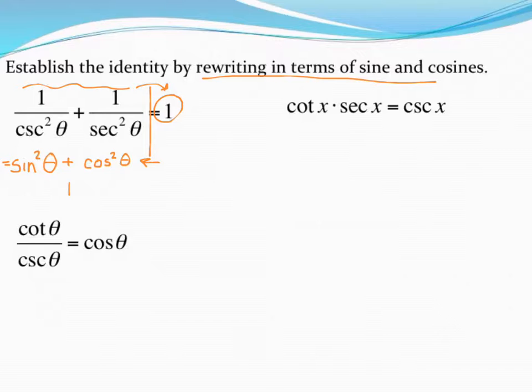And so I end up there, which was where I was trying to get to. I've gotten to my destination. I've established that identity by rewriting in terms of sine and cosine. So some of these are just that easy. Of course, some of them are a little bit trickier.